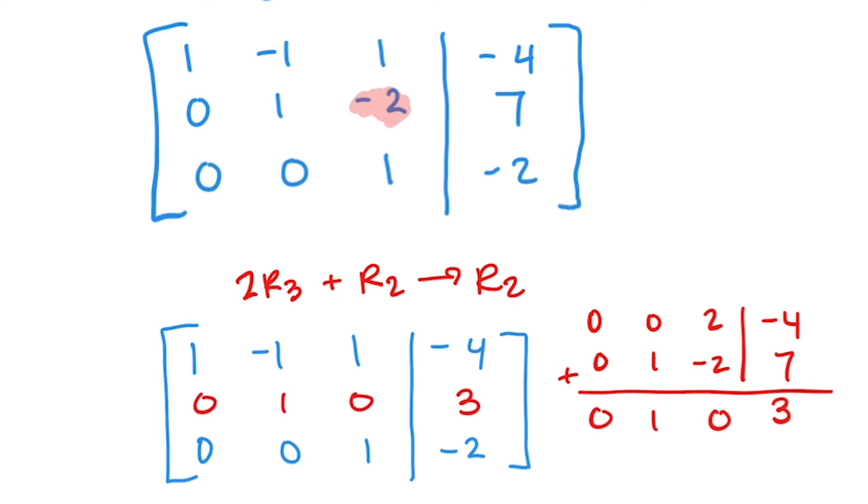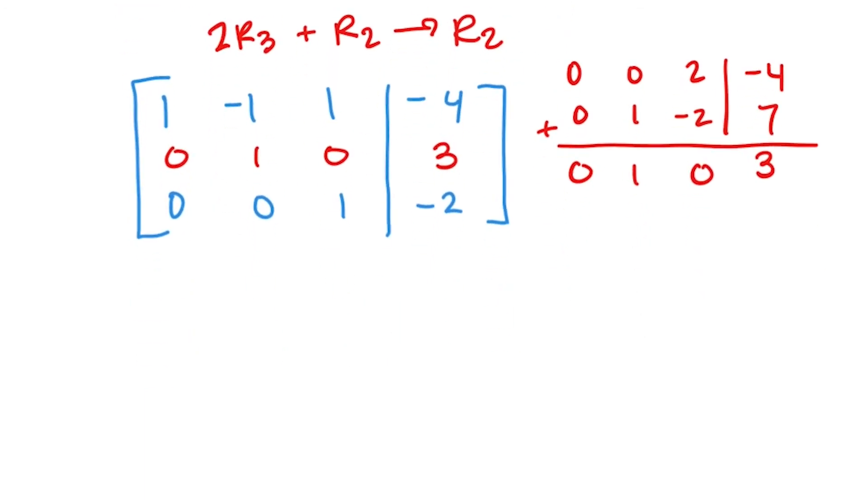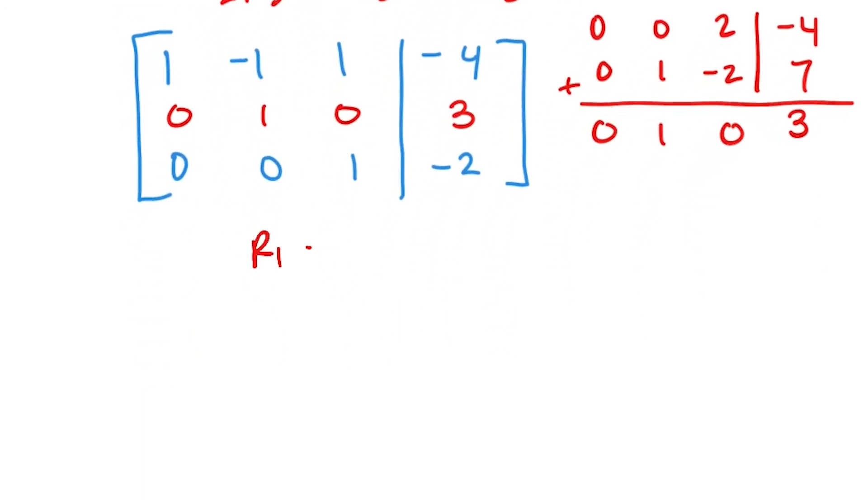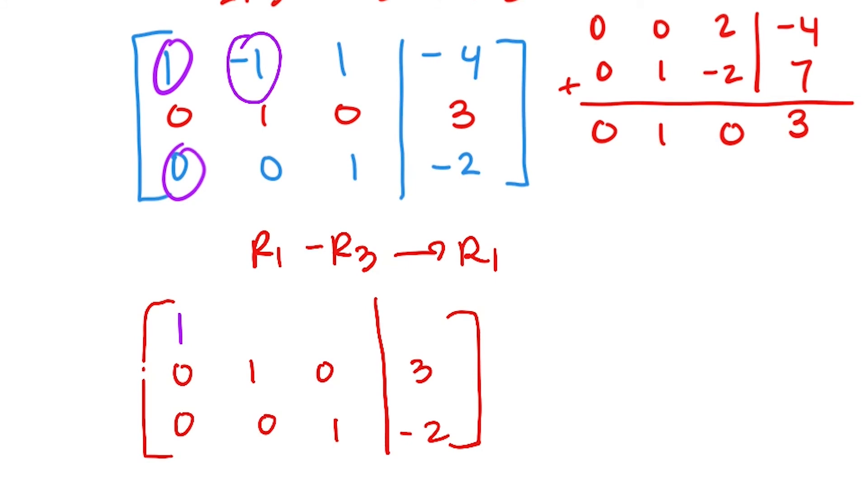So the second and third rows are completely done. We just need to fix a couple things on the first row, namely this one next. We need to change this to a 0. I need to use the third row because this is always going to stay a 0 no matter what I multiply by it, but this is a 1 that I can use. 1 minus 1 is 0. So I'm going to do row 1 minus row 3 to change row 1. So row 2 is staying the same as well as row 3. So then we'll do row 1 minus row 3. 1 minus 0 is 1. Negative 1 minus 0 is -1. 1 minus 1 is 0. And -4 minus a -2 is -2.